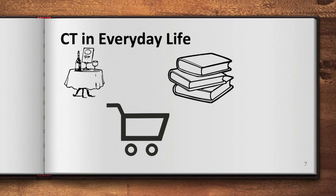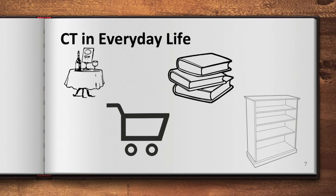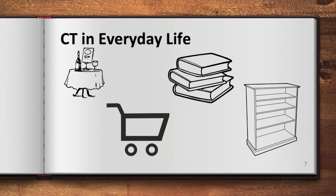And lastly, algorithms. An algorithm in everyday life is like following a recipe — you have the steps laid out and everyone should be able to follow them. Another example is driving directions: anyone should be able to follow the turns and end up at the same location.